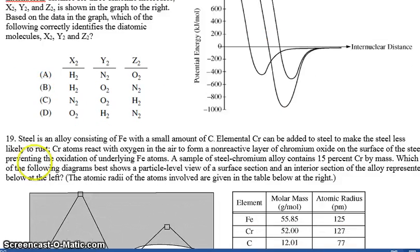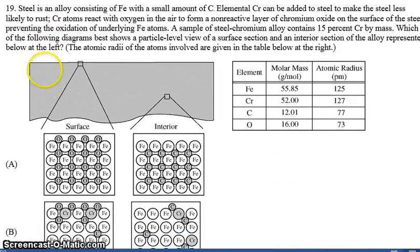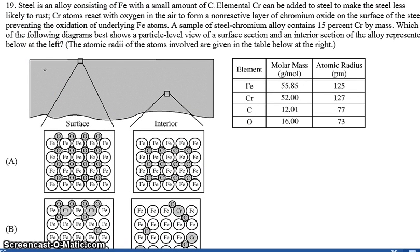The last one is a similar problem, but one that you can probably logically figure out. We're looking at another alloy. Steel is an alloy consisting of iron and carbon. This is a good little fact to have that steel is the alloy between carbon and iron.